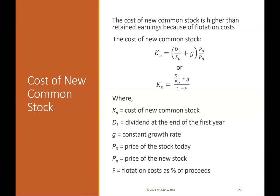Cost of new common stock: The cost of new common stock is higher than retained earnings because of flotation costs. The formula is K = (D / P + G) / (1 − F), where K is the cost of new common stock, D is the dividend at the end of the first year, G is the constant growth rate, P is today's stock price, and F is flotation costs as a percentage of proceeds.